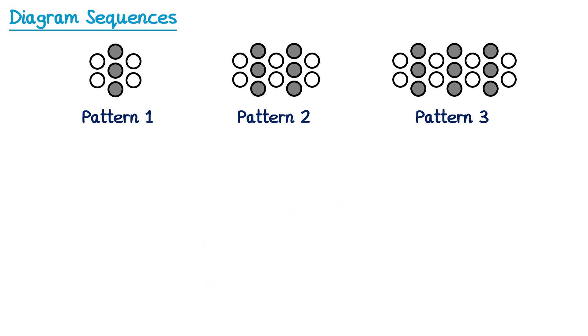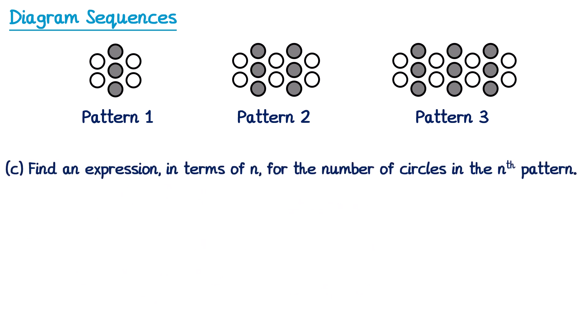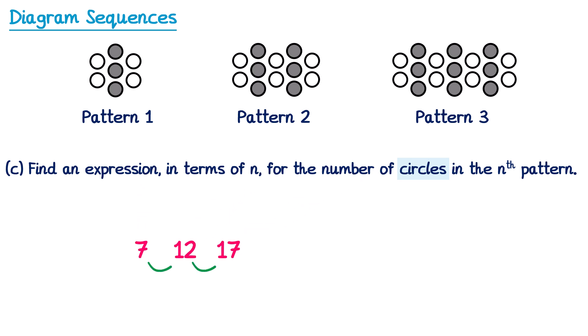For part c: find an expression in terms of n for the number of circles in the nth pattern. This time it says the number of circles regardless of whether they are white or grey. The number of circles in pattern 1 is 7, pattern 2 is 12, and pattern 3 is 17. To get from one term to the next we're adding on 5, so it must be a 5n sequence. The 5 times table is 5, 10, 15. To get from this to our sequence we need to add 2. So the nth term is 5n plus 2.